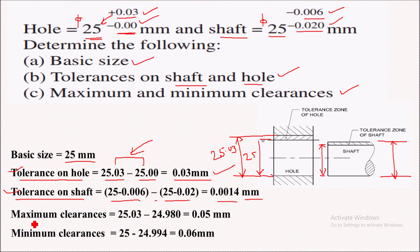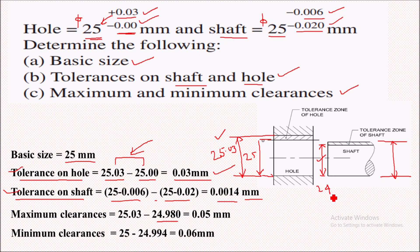For maximum clearance, the hole should be bigger and the shaft should be smaller. So we take the maximum limit of the hole, which is 25.03 mm, and the minimum limit of the shaft, which is 24.98 mm. Subtracting, the maximum clearance between hole and shaft is 0.05 mm.